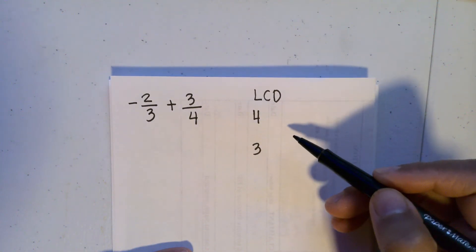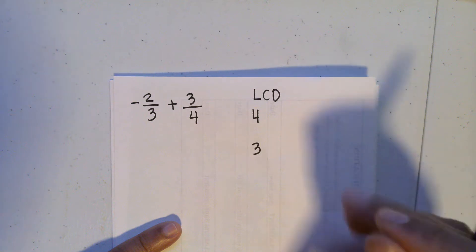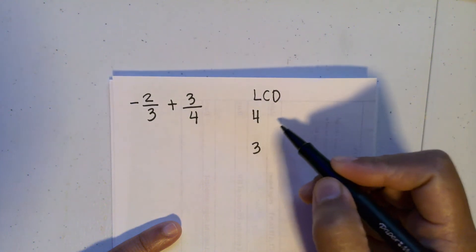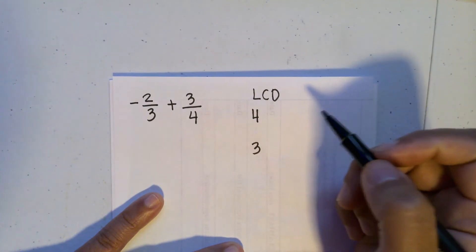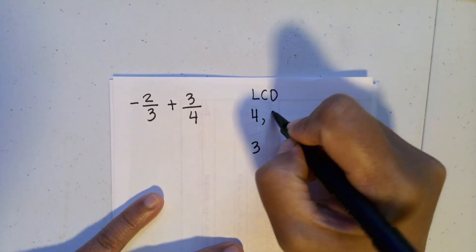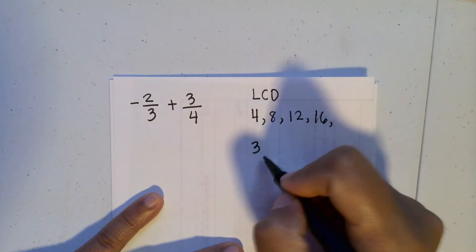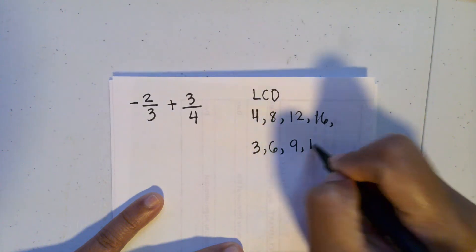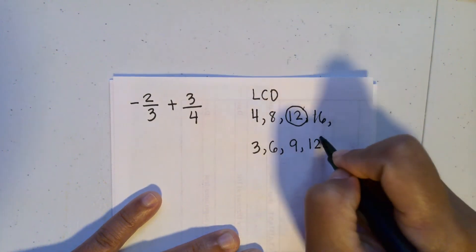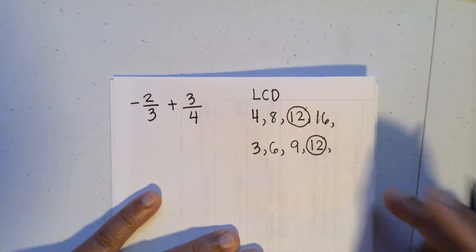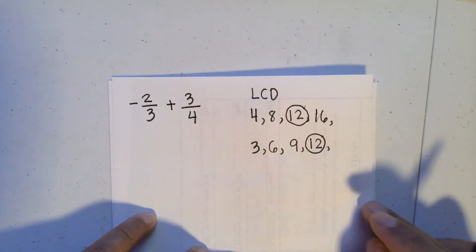The least common denominator is simply the least common multiple of the two denominators. We can find it by listing all the multiples of four and all the multiples of three until we find the smallest common one. For multiples of four: four, eight, twelve, sixteen, and so on. For multiples of three: three, six, nine, twelve. Twelve is the least common multiple, so it becomes the least common denominator.